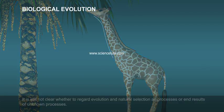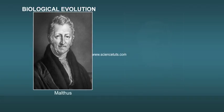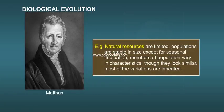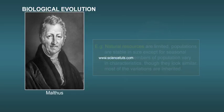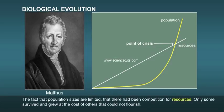The work of Malthus on population influenced Darwin. Natural resources are limited and populations are stable in size except for seasonal fluctuation. Members of a population vary in characteristics though they look similar, and most of these variations are inherited. Population size would grow exponentially if everybody reproduced maximally, but since population sizes are limited, there is competition for resources — only some survived and grew at the cost of others that could not flourish.